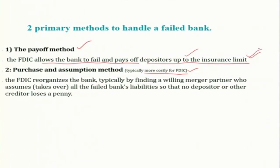If one bank fails and because of the contagion effect other banks also fail, allowing failure is not the best strategy — it is better to avoid bank failure altogether. If the FDIC is there and all depositors are assured that if a bank fails the FDIC will pay back their deposit, then bank panic will be reduced. Even if one bank fails, people would not run to the bank because they are covered by the government safety net — deposit insurance.